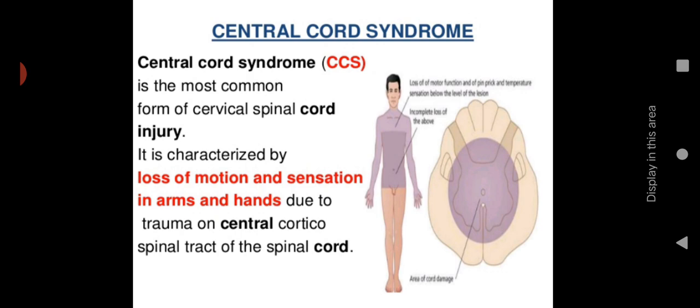Central cord syndrome is the most common form of cervical spinal cord injury. It is characterized by loss of motion and sensation in the arms and hands due to trauma on the central corticospinal tract of the spinal cord. The trauma occurs in the central part of the spinal cord — shown in violet in the diagram — affecting both arms and hands.